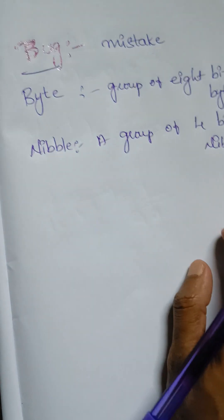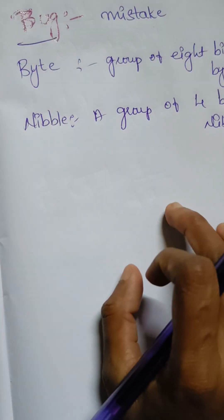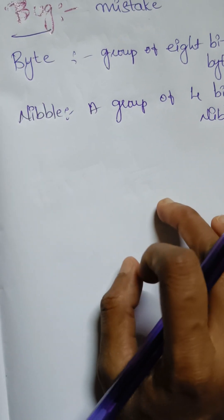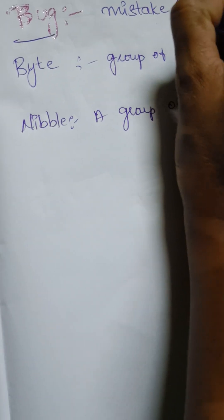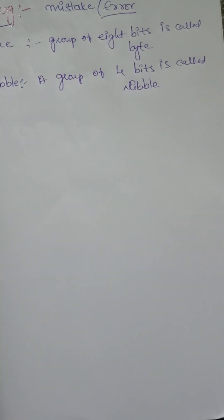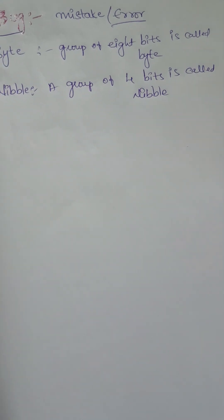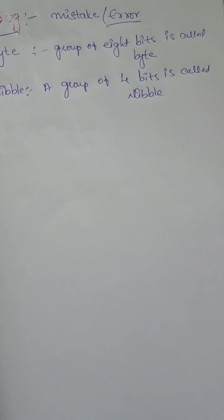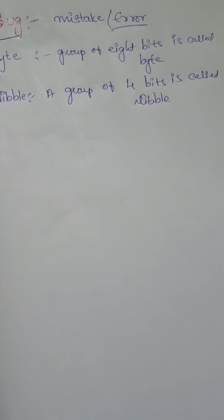Let's revise these terms again. Bug — according to the programming language, it's a mistake. If someone says there is a bug in your program, it means there is a mistake in your program. We can call it an error also. Byte means a group of 8 bits. Nibble means a group of 4 bits.